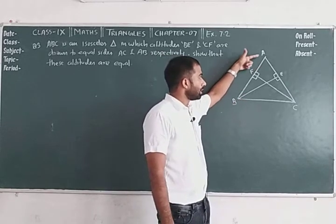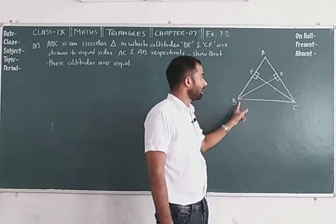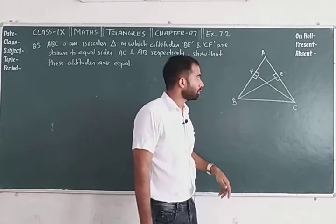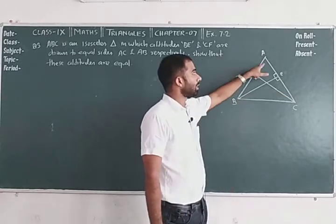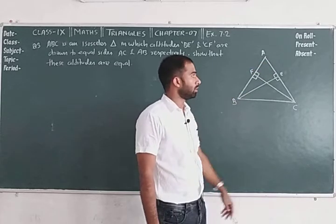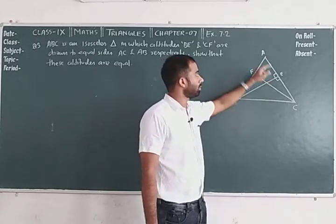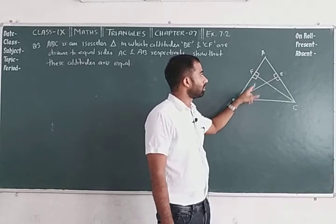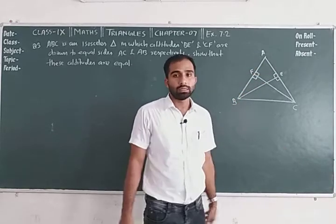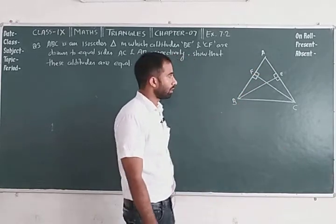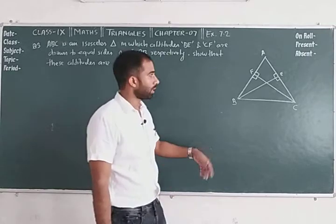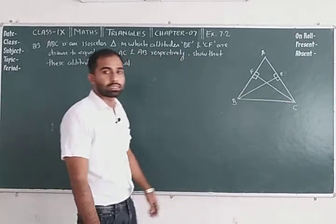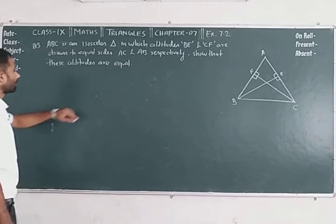Angle AEB is equal to angle AFC — 90 degrees each. And angle A is equal to angle A — common. So both triangles are congruent by Angle-Angle-Side criteria. By CPCT, BE is equal to CF. This is a very easy question.